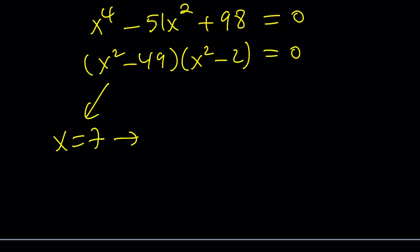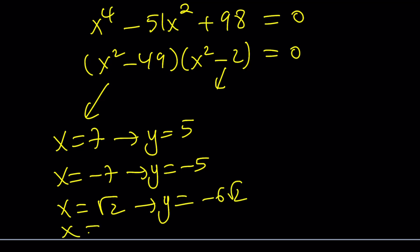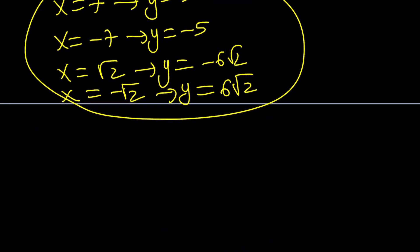Obviously, x equals 7 is going to produce two y values because we have the plus minus sign, but it's not going to satisfy the equation. The one that satisfies it is y equals 5. If x is negative 7, y is negative 5. If x is root 2 from here, then y is going to be negative 6 root 2 as before. And if x is negative root 2, y is going to be positive 6 root 2. So those are going to be our ordered pairs one more time.